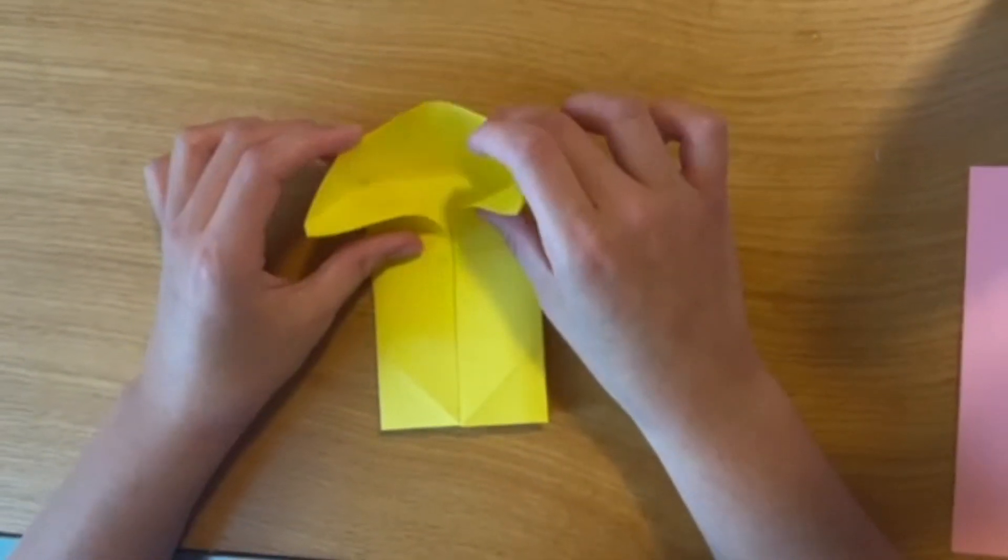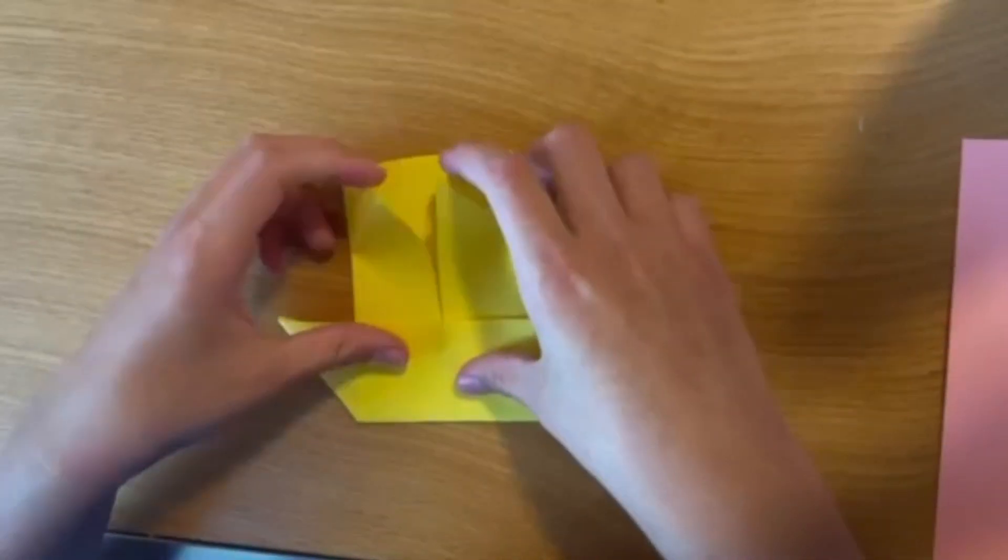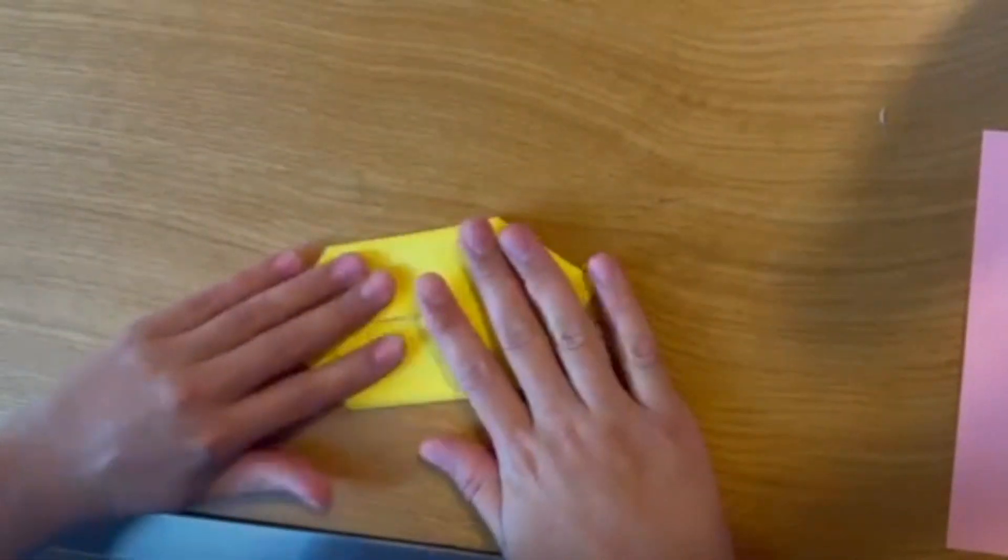Next we're going to turn it around and do the exact same thing to the other side just like this. At this point your paper should look like this and you're going to take the top part of it and fold it downwards.